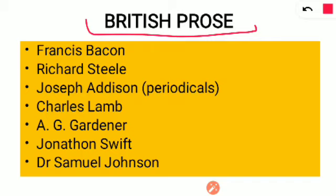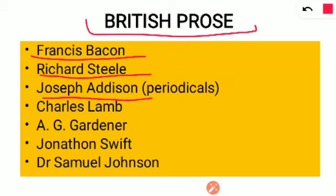The next important topic is British prose. First, Francis Bacon — you have to read all his important essays. Important works include Advancement of Learning and New Atlantis, along with their publication dates. Also prepare dates of birth and death for prose writers, as those are also asked. Next: Richard Steele and Joseph Addison — their periodicals like The Tatler and The Spectator, their duration and publication details.